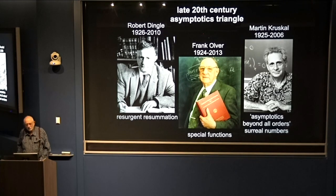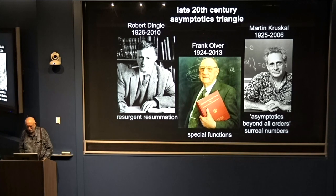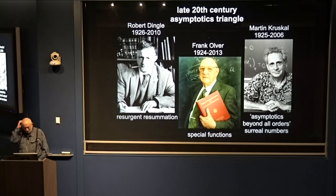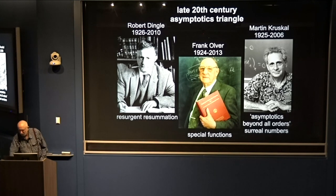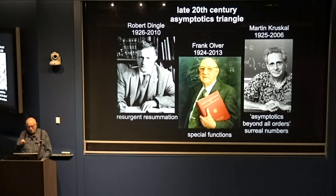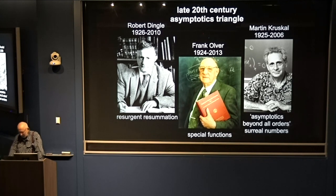Then Martin Kruskal. He had encountered divergent series in studying adiabatic invariants in plasma physics in the late 50s and early 60s. He realized these adiabatic invariants were conserved to all orders in these nonlinear differential equations, and said of course they're not exact — you need asymptotics beyond all orders to understand that. He and his colleagues in a number of problems, also in fluid mechanics, were able to identify what the small exponentials were.